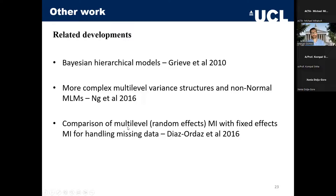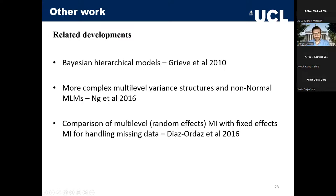Finishing with some related developments: Bayesian hierarchical models on top of the three sets of methods we covered — essentially a multi-level model estimated from a Bayesian perspective. There are also studies using more complex variance structures and non-normal multi-level models, and another study comparing random effects versus fixed effects in the context of missing data.